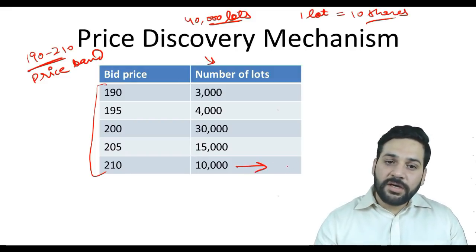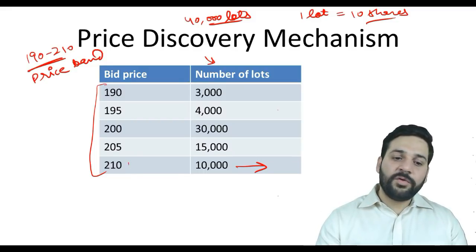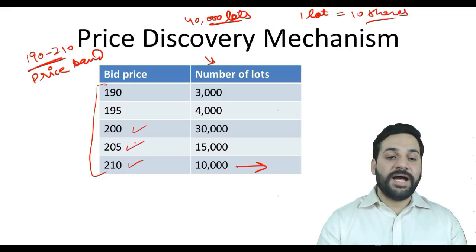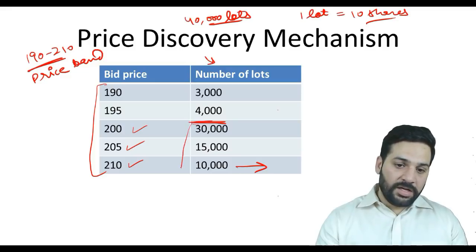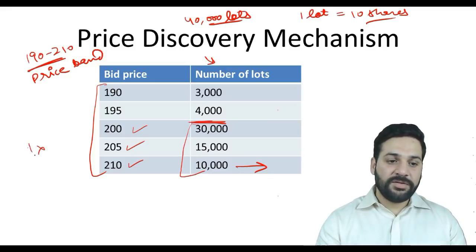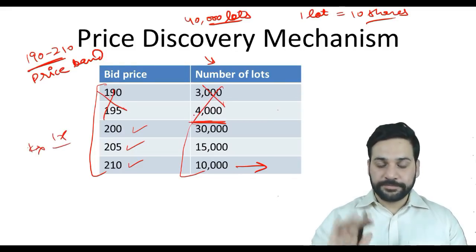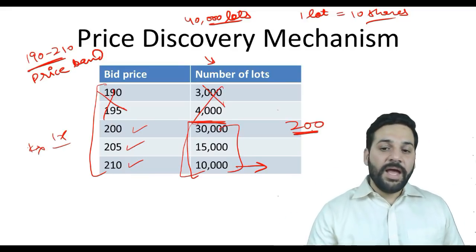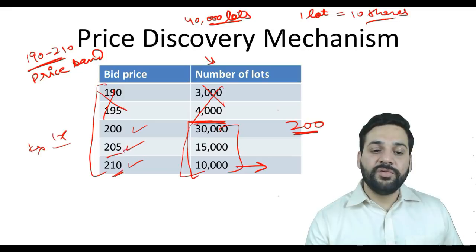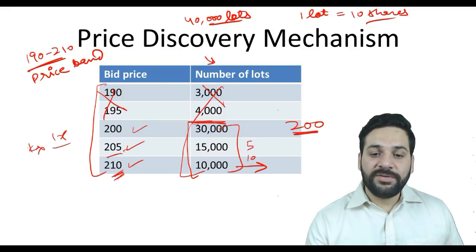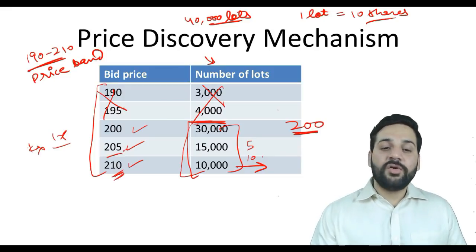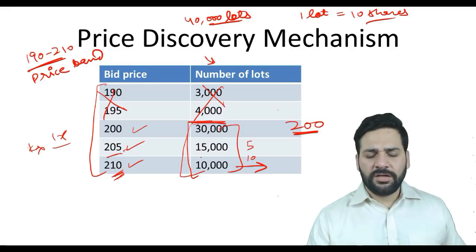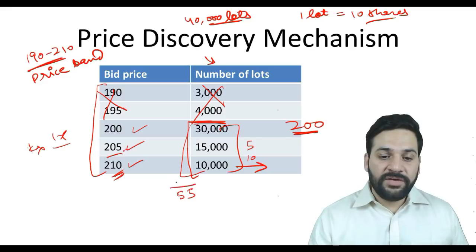Suppose 10,000 people bid at 210, 5,000 people bid at 205, and 30,000 people bid at 200. By this point the issue is subscribed 1x. The strike price will be 200. The extra 5 rupees and 10 rupees collected from the higher bidders must be refunded, and shares are allotted on a pro-rata basis — so out of 55,000 total applicants for 40,000 lots, shares are allotted proportionally.